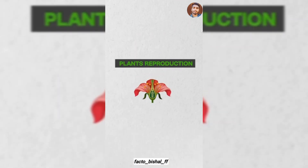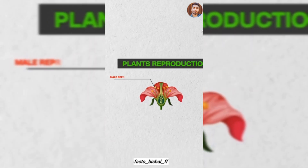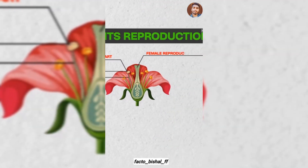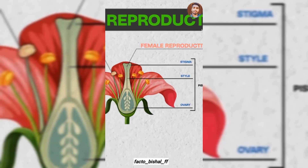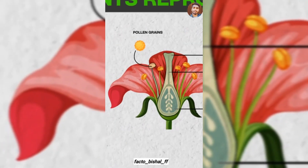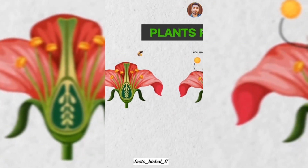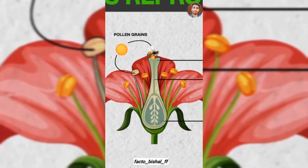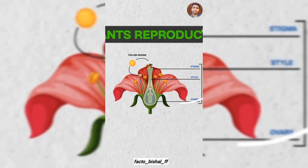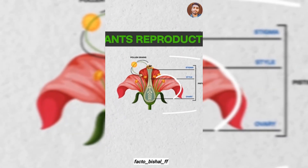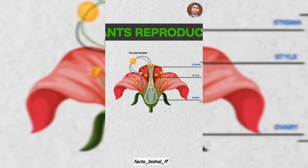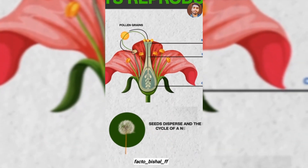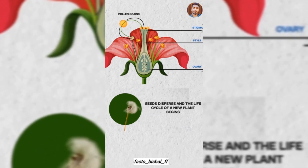The seedling grows and once the plant is fully mature, it develops flowers. In the flower, there is a male reproductive part called the stamen and a female reproductive part called the pistil. The stamen produces pollen grains. Pollinating insects and wind carry pollen grains to the pistil, leading to fertilization. Then seeds are formed, dispersed, and the new plant begins the life cycle again.